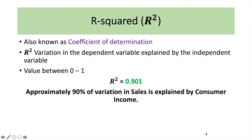First, we will look into R-square, also known as the coefficient of determination. What information does R-square provide? R-square shows the variation in the dependent variable explained by the independent variable. We want to see how much variation in the dependent variable is explained by the independent variable. In our case, the independent variable was income and the dependent variable was sales — so we want to see how much variation in sales is explained by income.